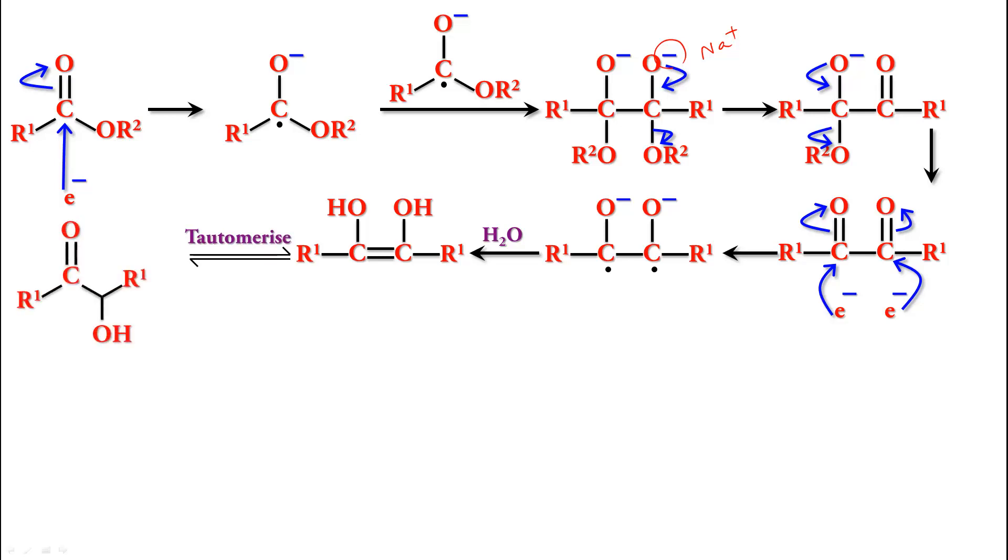Now depending on the nature of the R, the steric factor, and the ring possibility, a diester can even undergo intramolecular cyclization over intermolecular condensation.